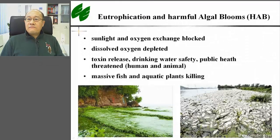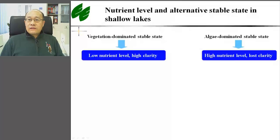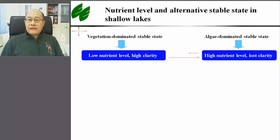Eutrophication can cause harmful algal blooms, and HABs can cause sunlight and oxygen exchange to be blocked, dissolved oxygen depleted, toxins released, and massive fish and aquatic plant die-offs. It is well recognized that there are two alternative stable states in shallow lakes: vegetation-dominated stable states where nutrient levels are low and clarity is high, and algae-dominated states where nutrient levels are high and clarity is low. The shift between the two states is not easily reversible — it is easy for a lake to deteriorate into the bad state, but more difficult to switch it back to the good state.